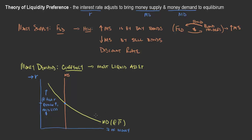As the return on investment decreases — at low interest rates — your return is low, and so you're going to hold more currency itself. There's not as much incentive to hold assets bearing a return if that return is very low. You're not going to loan out as much money or hold as many stocks. You're going to hold more currency because the opportunity cost of holding it is much lower.